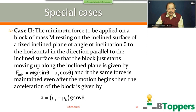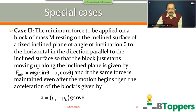The minimum force to be applied on a block of mass M resting on the inclined surface of a fixed inclined plane of angle of inclination θ to the horizontal, in the direction parallel to the inclined surface, so that the block just starts moving up along the inclined plane, is given by F_min = mg(sin θ + νs cos θ). And if the same force is maintained even after motion begins, then the acceleration of the block is given by a = (νs − νk) g cos θ.